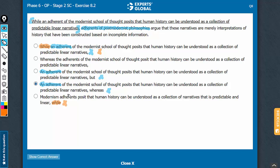Let's confirm choice B now. Whereas the adherence of the modernist school of thought posit something, adherence of postmodernist philosophies argue something else. Makes complete sense. So B is the correct answer choice here.